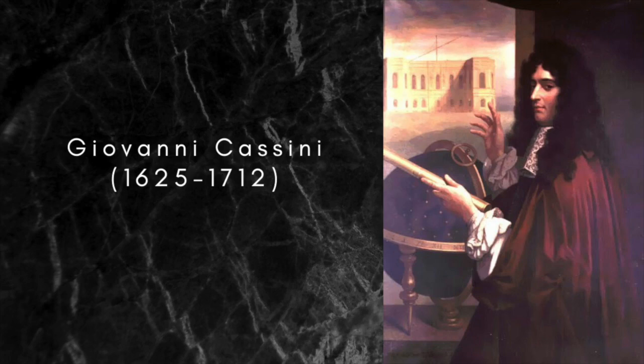Cassini thought that the Sun travelled round the Earth on one of these curves rather than the ellipse, as correctly proposed in Kepler's heliocentric scheme, with the Earth at one focus.